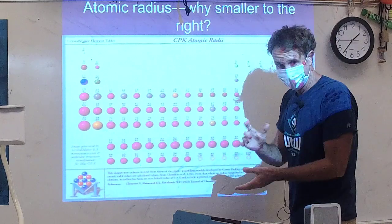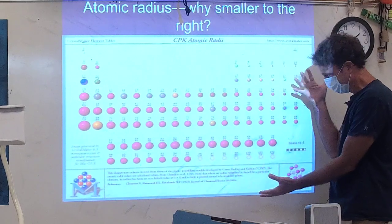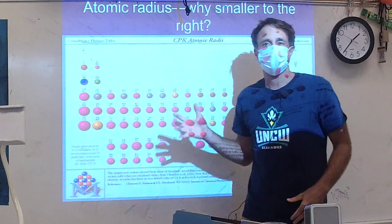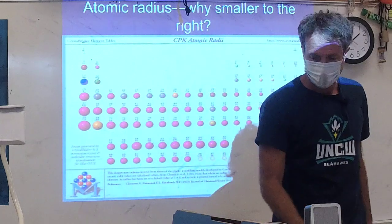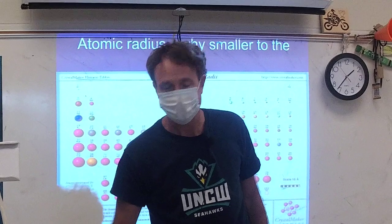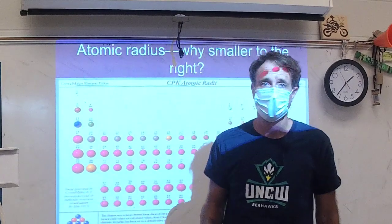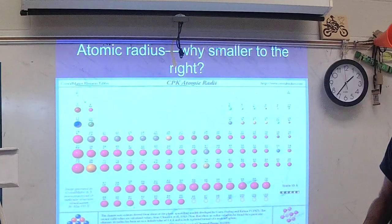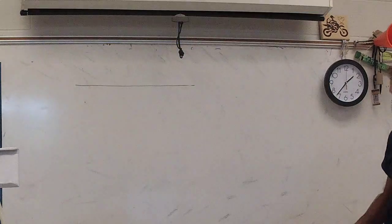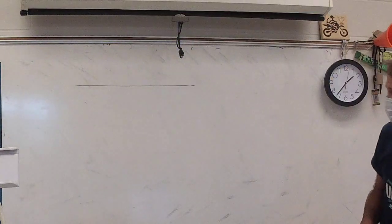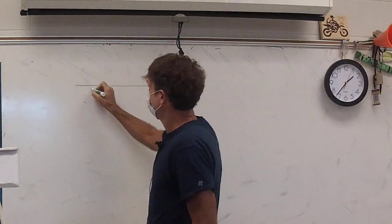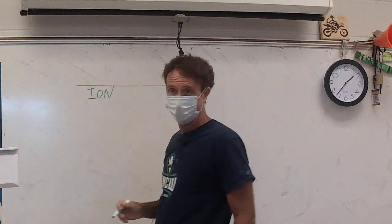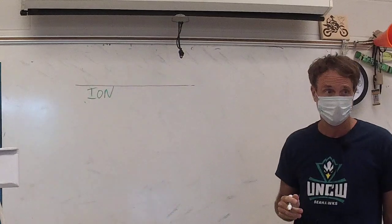This is a nice, simple chart that helps us a lot, but this is a chart of neutral atoms. Not all atoms are neutral — some atoms are charged. We're going to talk about those today and talk about the size of charged atoms. A charged atom is called an ion.